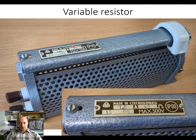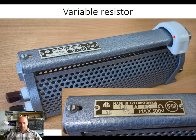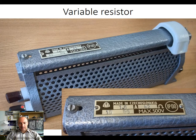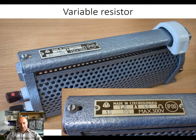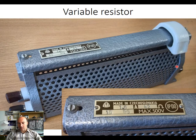The third terminal is the slider. The slider is connected to this ceramic part, and you can actually move it to the left and to the right. By moving it you can change the resistance between this terminal and the two other terminals. For example, if the slider is at the very right-hand side, between the slider terminal and the far terminal we have almost the full resistance — 42 ohms — but between the slider terminal and the right terminal we would have very small resistance; in the ideal case it would be zero.